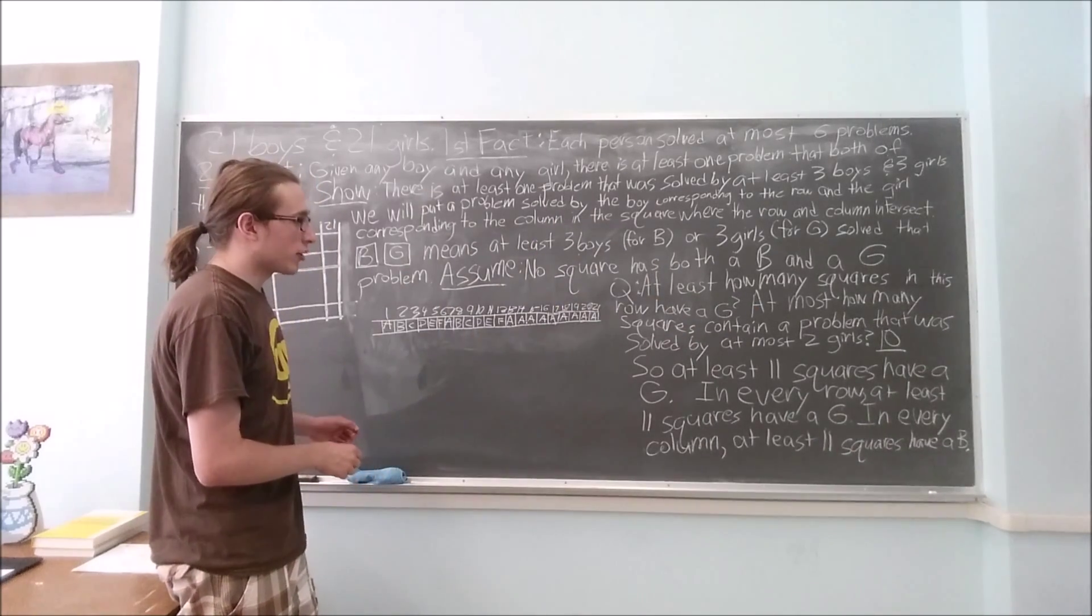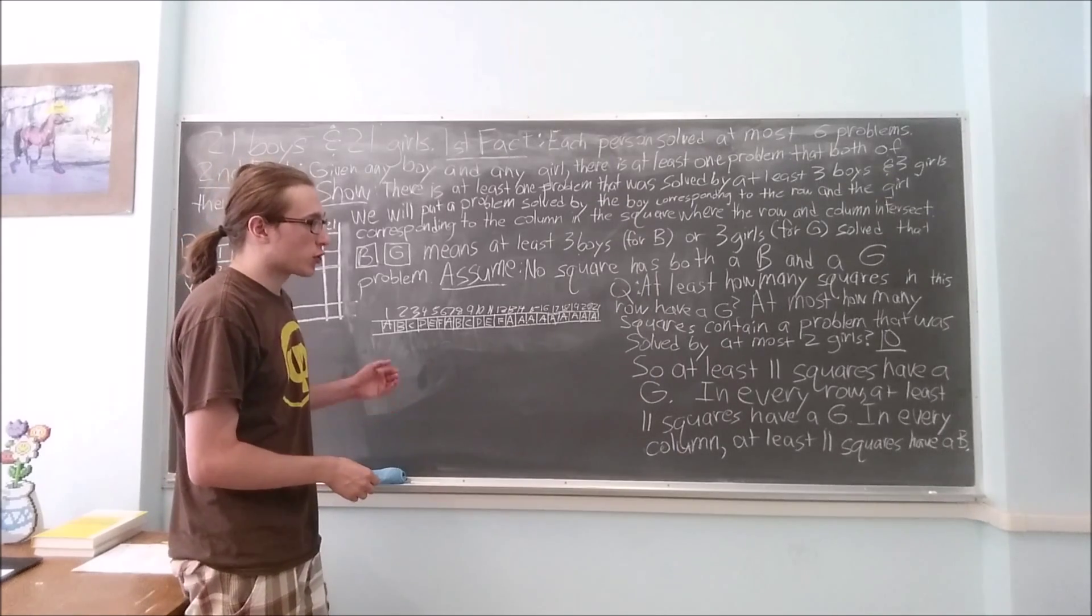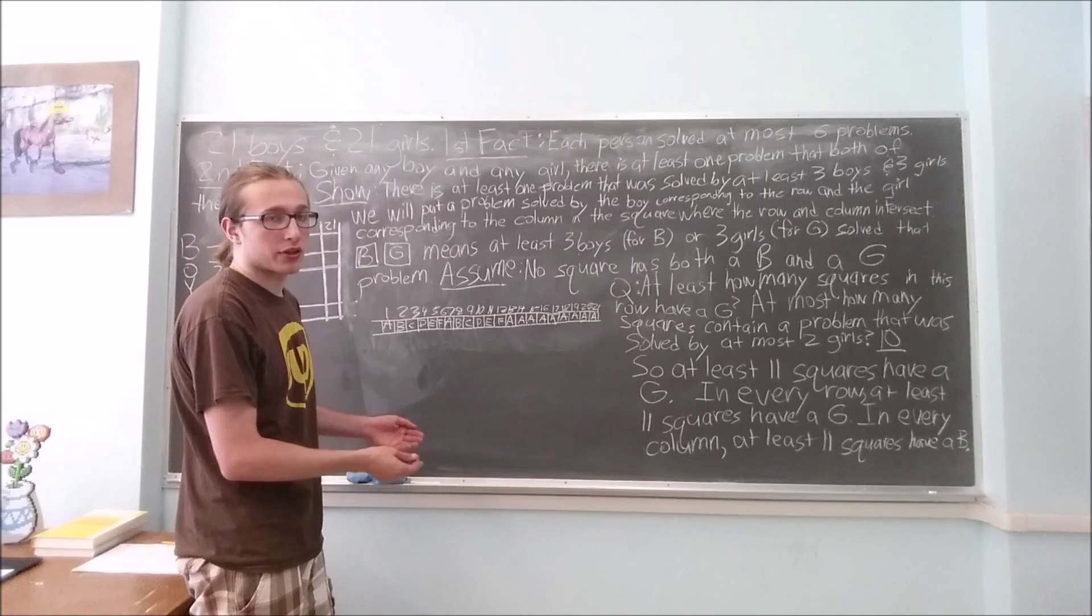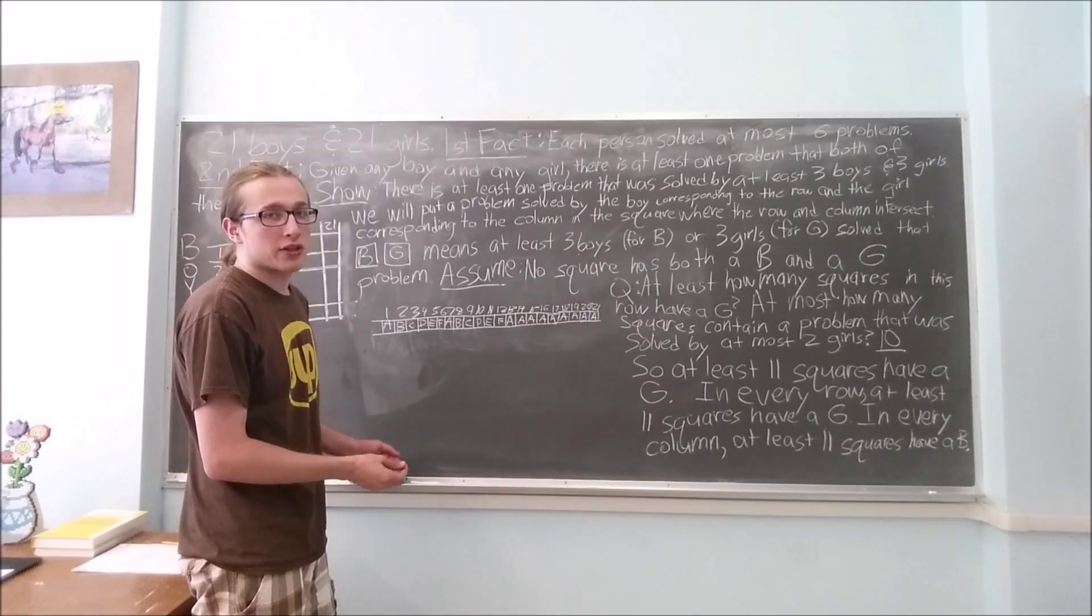Now, since there are twenty-one rows and twenty-one columns, we see that there have to be at least twenty-one times eleven, or two hundred and thirty-one squares with a G, and at least two hundred and thirty-one squares with a B.